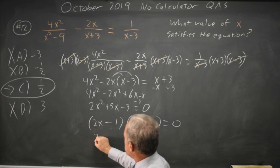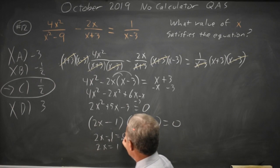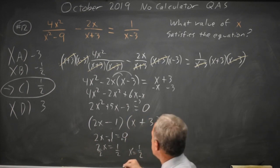This product equals 0, so either 2x minus 1 equals 0, 2x equals 1. If I add 1 to both sides, divide both sides by 2, I get x equals 1 half. That's the answer I got by substituting in numbers.